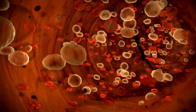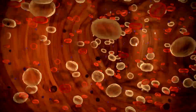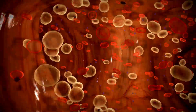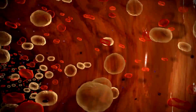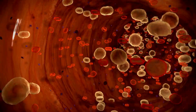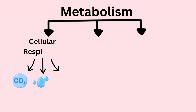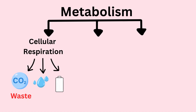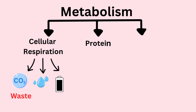These metabolic wastes and other unwanted substances are constantly circulating in the body through the bloodstream. For example, during cellular respiration, carbon dioxide is produced as waste that is exhaled out of the body through the lungs.